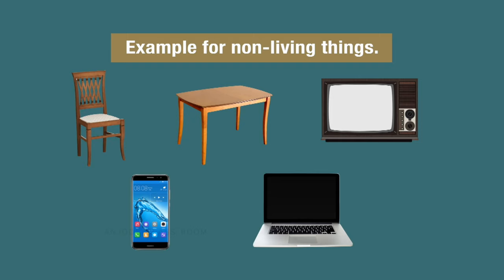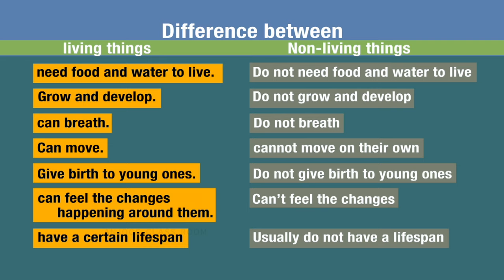Non-living things do not breathe, and if you give them food to eat, they will not eat it. So those are the features of non-living things. When writing the difference, just take each point about living things and write the opposite for non-living things — it is given in your book. The difference between living and non-living things is very important; any four points should be studied.